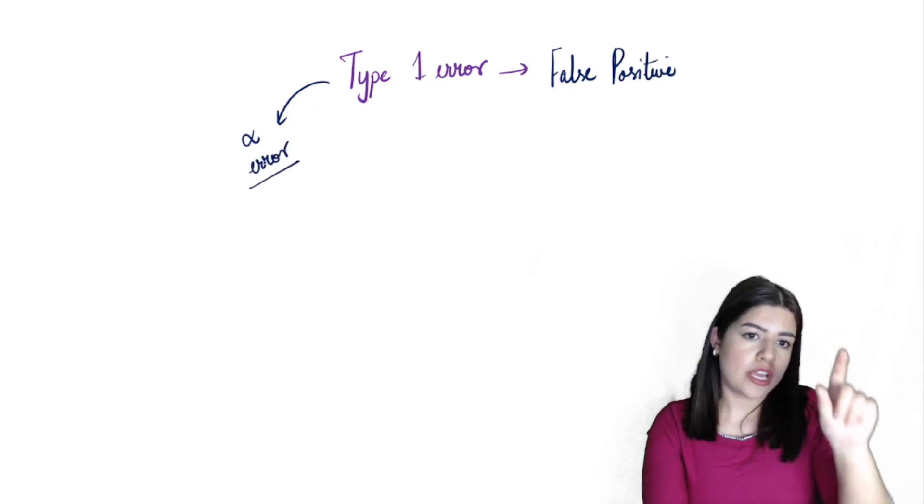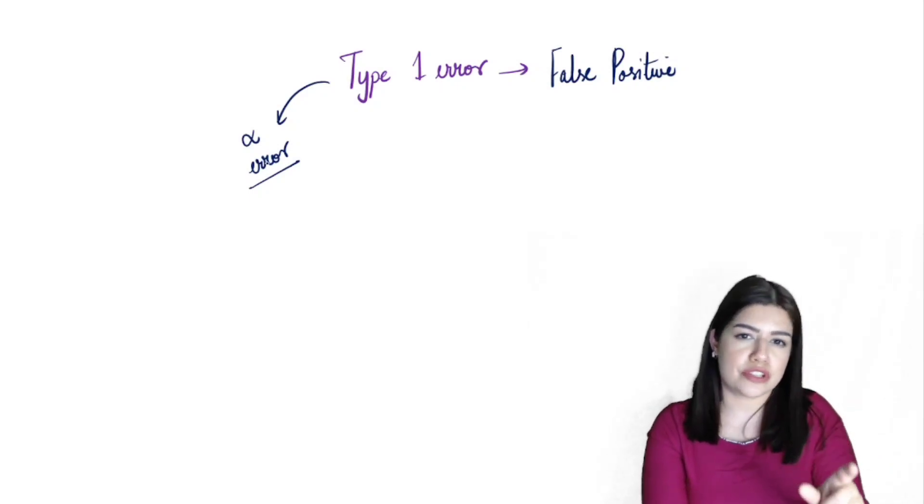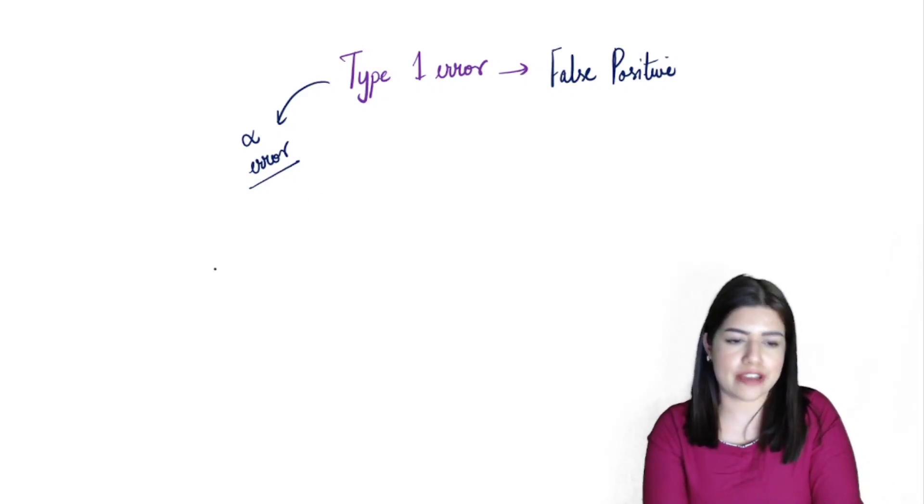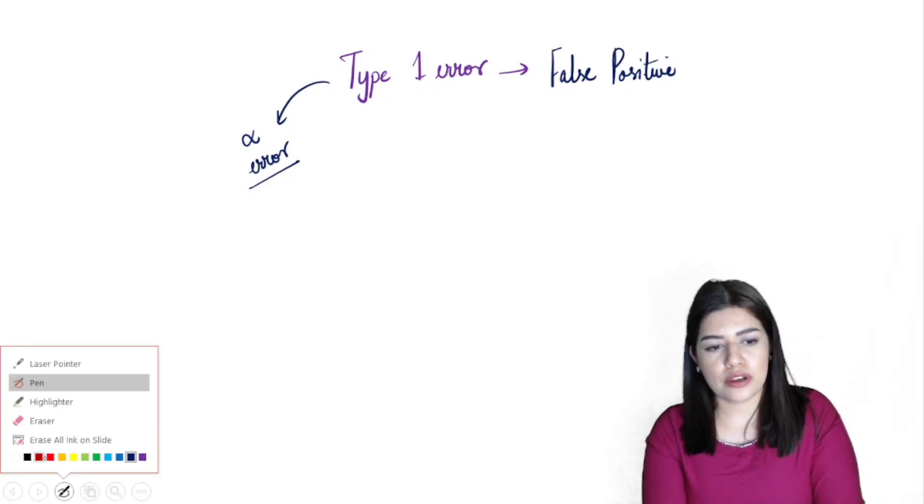Let's go ahead and try to understand what this is. This is also known as alpha error. This same alpha is the representative of your significance level as well. When we say p-value is less than or equal to 0.05 and so on, that is nothing but your alpha error.